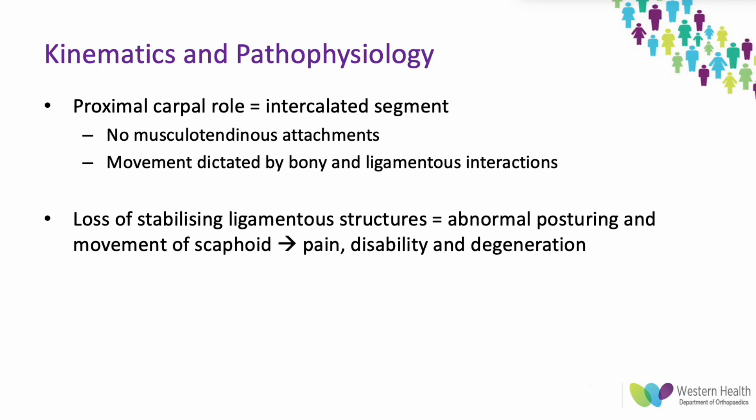In terms of kinematics and pathophysiology, the proximal carpal row is an intercalated segment — it has no musculotendinous attachments and movement is dictated by surrounding bony and ligamentous interactions. The lunate is finely balanced by its intercarpal attachments, specifically the scapholunate and lunotriquetral ligaments. The STT joint provides a flexion moment on the scaphoid, while the triquetral-hamate joint provides an extension moment on the triquetrum, creating balanced tension on the lunate.